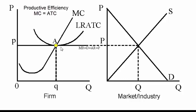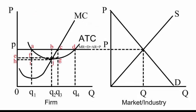This is productive and allocative efficiency. This is also where economic profit is equal to zero, because total revenue is zero PAQ. And since the average total cost is point A or P, the total cost is also zero PAQ, which means that economic profit is equal to zero.